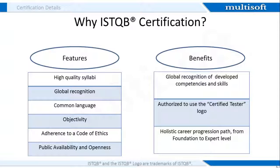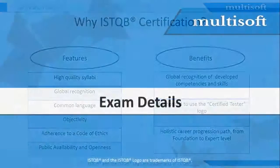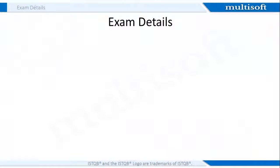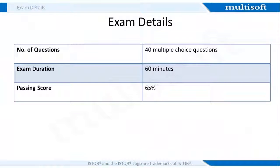An ISTQB credential provides international recognition of acquired competencies and skills. Also, an individual becomes authorized to use the certified tester logo on achieving the credential. The most important bit is that individuals have a complete progression path wherein they move from the foundation to expert level. To get an ISTQB certified tester foundation level certificate, you must successfully pass the foundation exam administered by your national or regional board or examination provider. The exam will consist of 40 multiple choice questions that need to be completed in a stipulated time of 60 minutes. In order to clear the exam, you need to secure at least 65% marks. Upon successful completion of the exam, you will be issued with an ISTQB foundation level certificate which is internationally recognized.